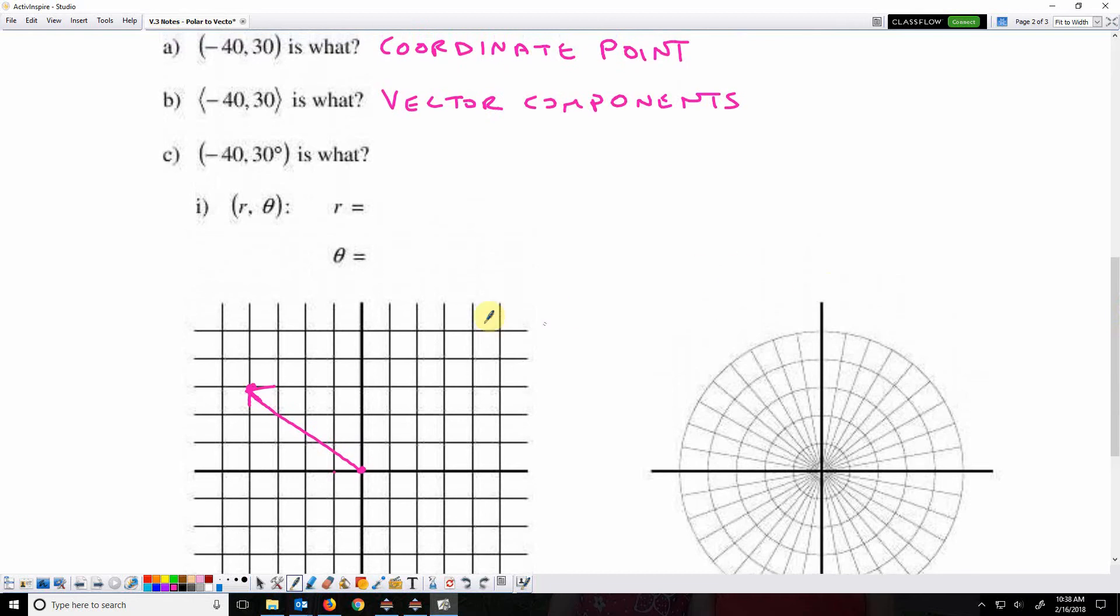Now, when I go back to regular parentheses, but I've got negative 40 and then 30 degrees, that is a polar coordinate. Okay, and that is in the form r theta.